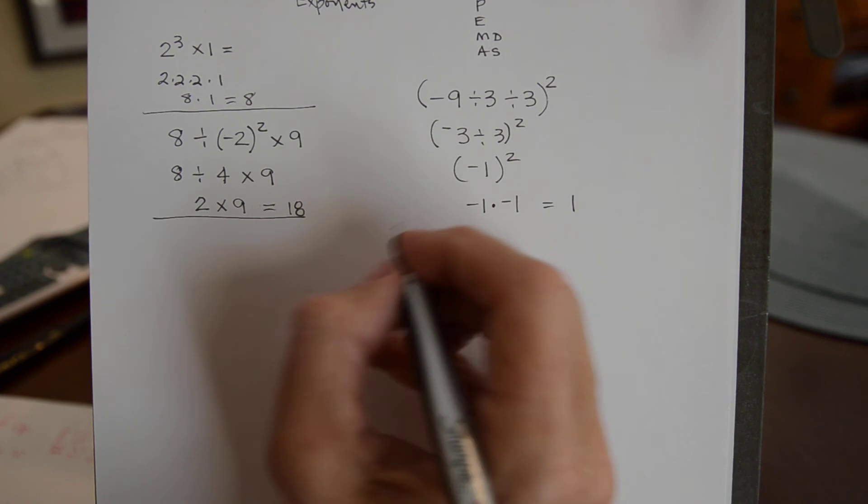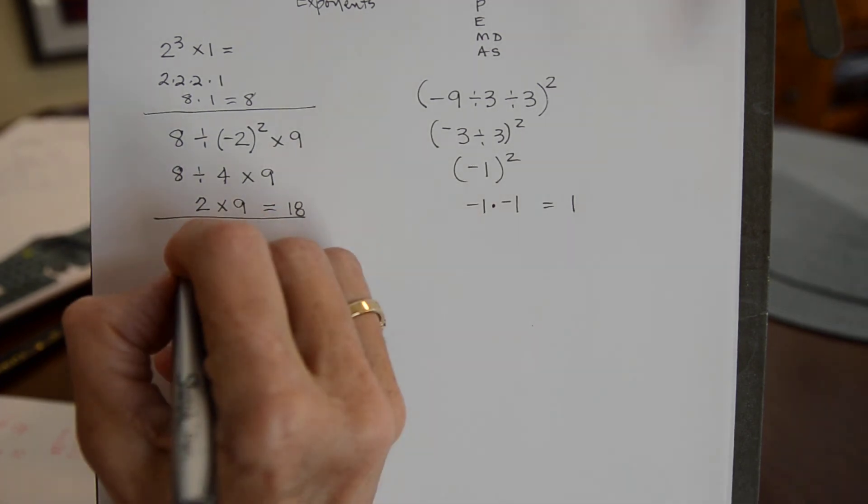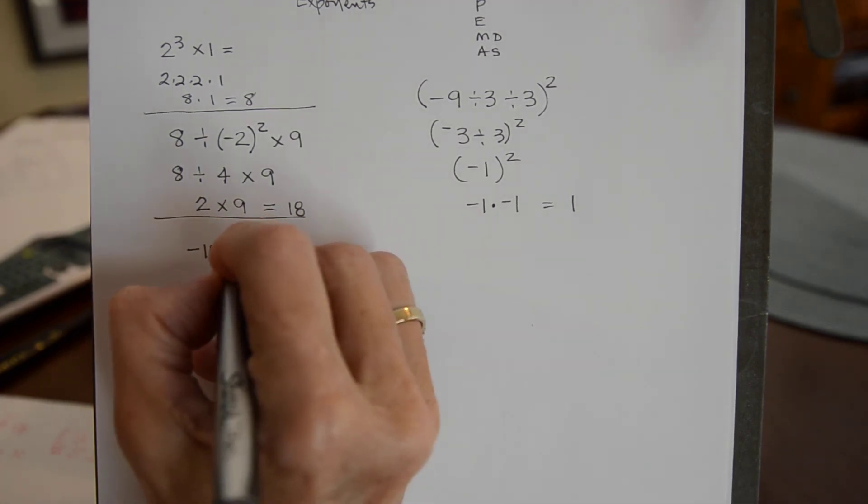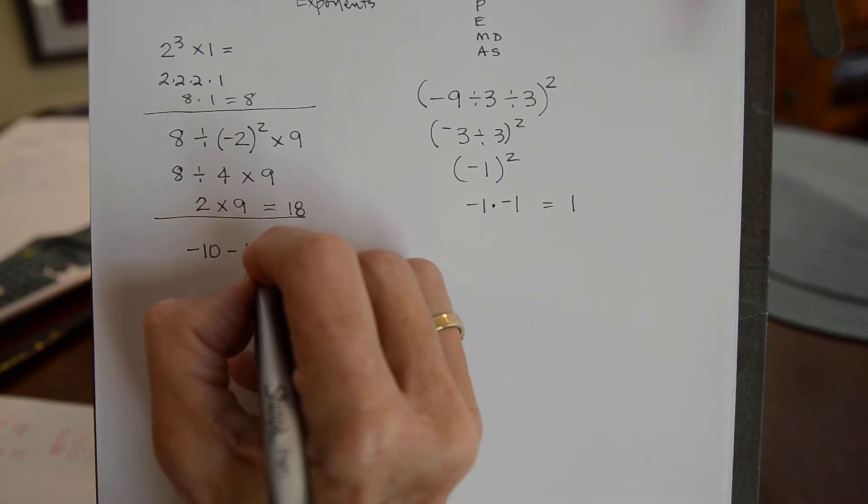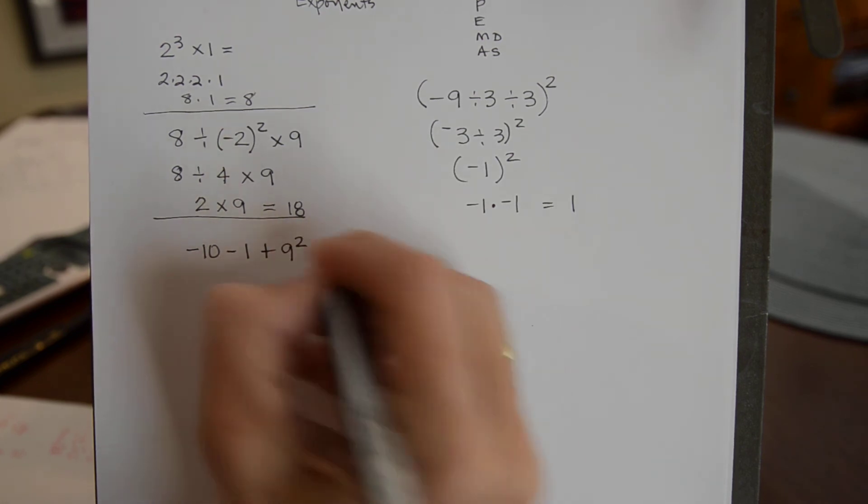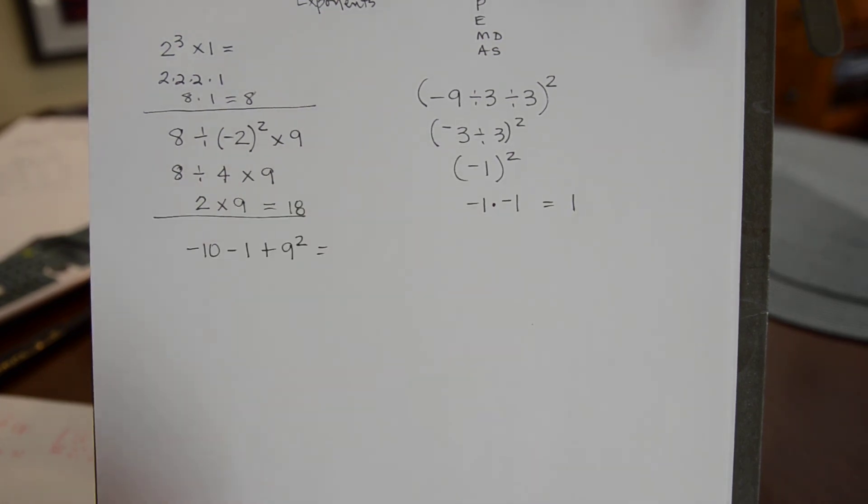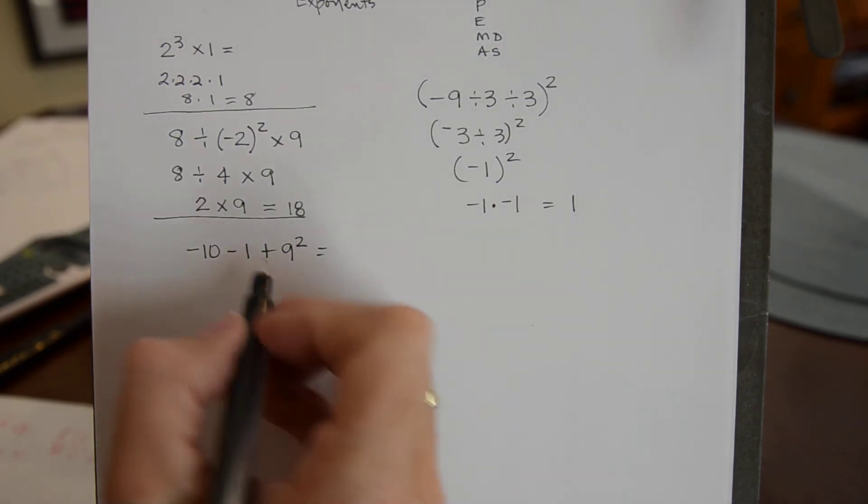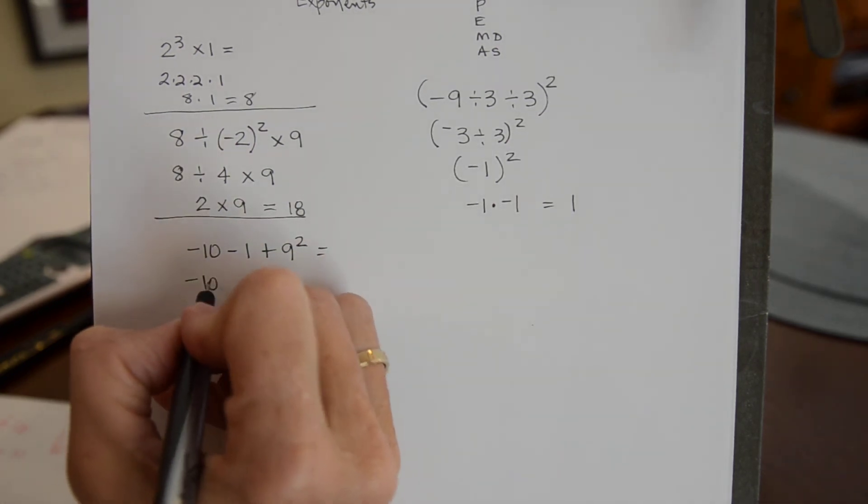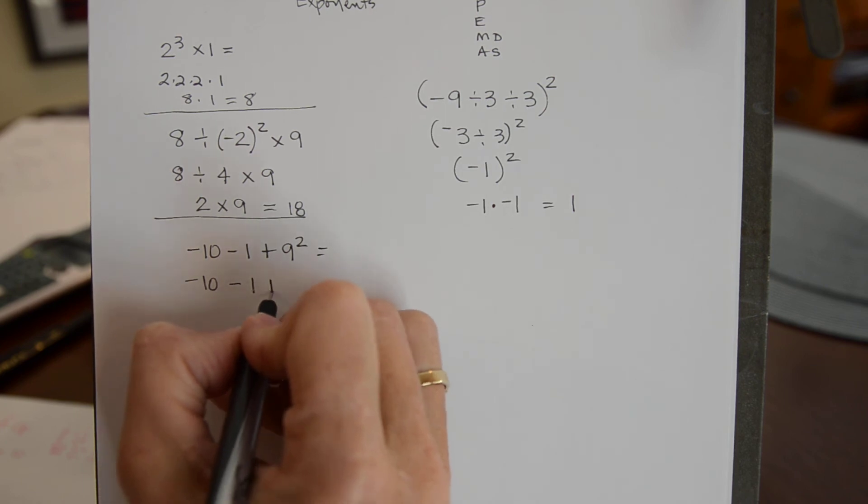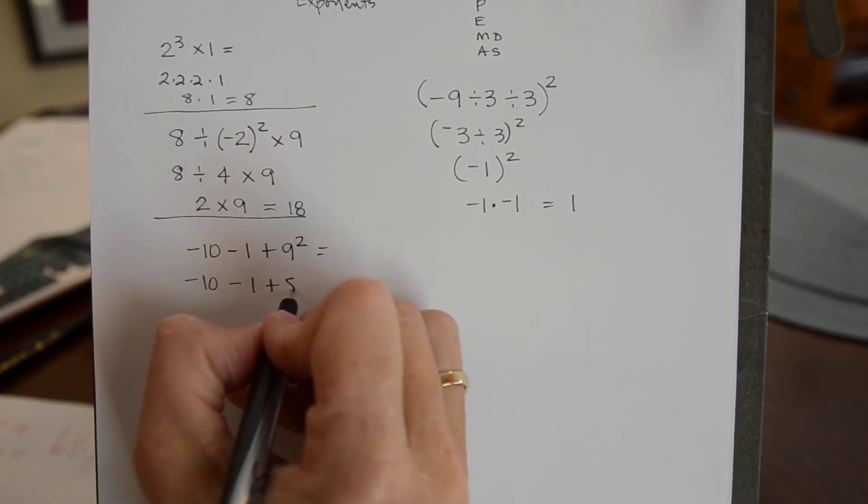And then we have negative 10 minus 1 plus 9 squared. And what does that equal? So I need to do this squaring first. I'll go ahead and just copy this down. And 9 times 9 is 81.